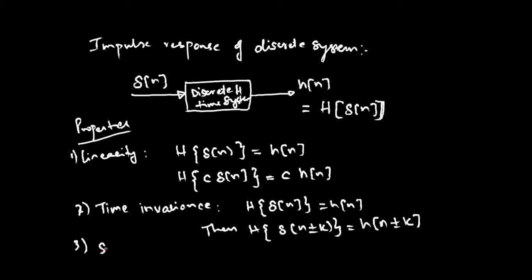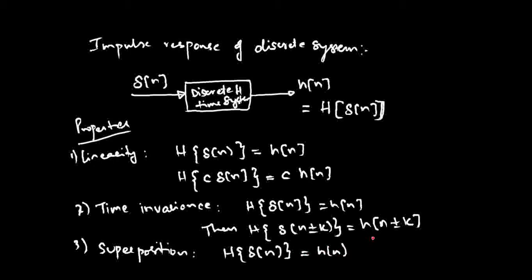The impulse response also satisfies the superposition property. If the impulse response of delta of n equals h of n, then the impulse response of c times delta of n minus k equals c times h of n minus k.